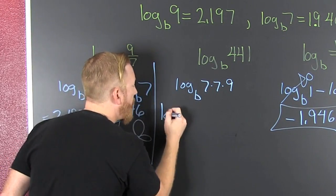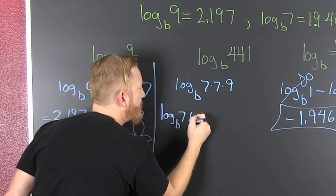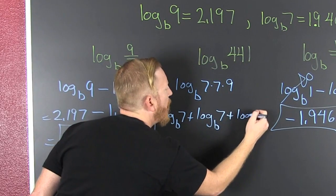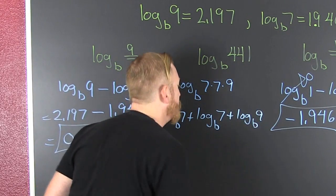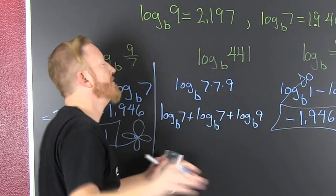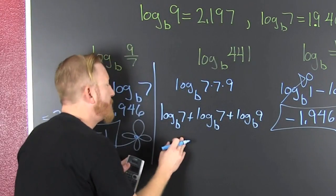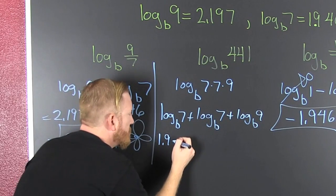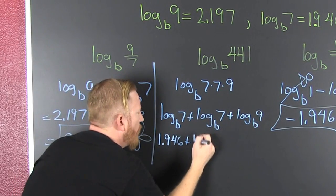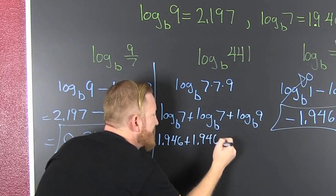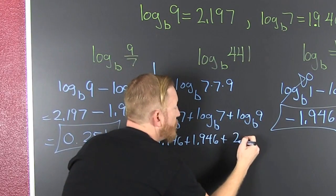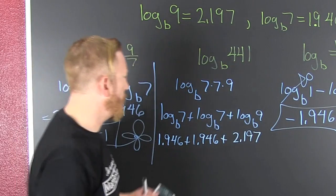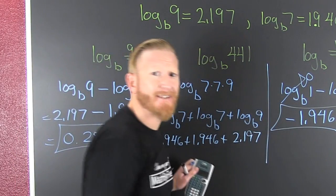Log base b of 7 plus log base b of 7 plus log base b of 9. Why does he talk like that? Some people say that I sound like him! Powerpuff Girls! 1.946 plus 1.946 plus 2.197!